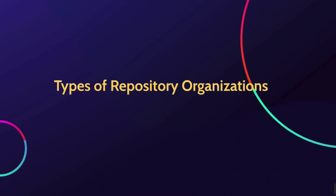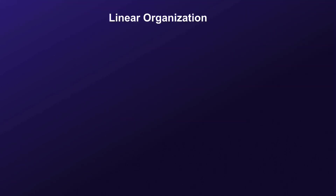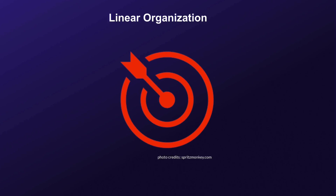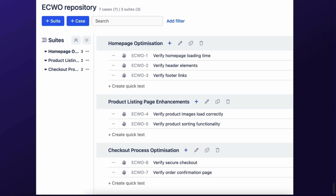Let's explore the different types of repository organizations that cater to various testing needs. There are three types: linear organization, matrix organization, and hybrid organization. Linear organization offers a straightforward approach, particularly suitable for smaller projects or those with fewer dependencies. Imagine you're working on a small project — perhaps an e-commerce website launch. With linear organization, your test cases could flow seamlessly from one to the next, allowing for easy navigation and a quick overview of testing progress.